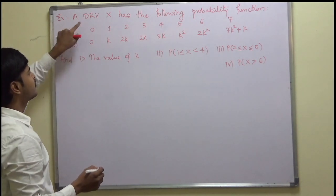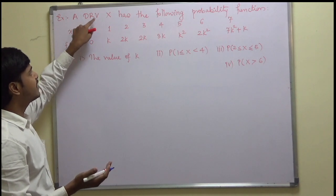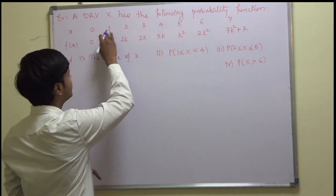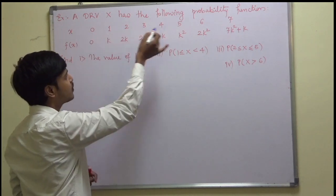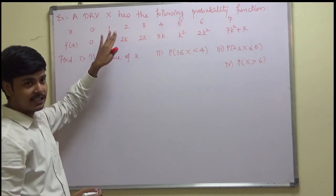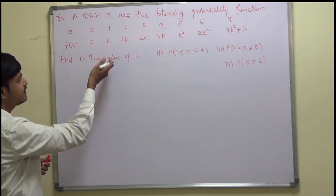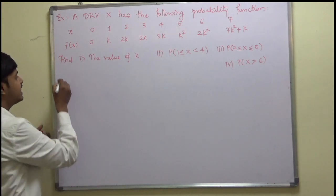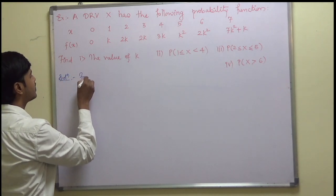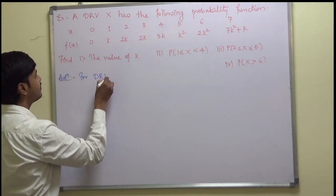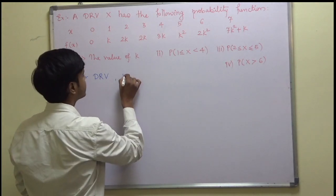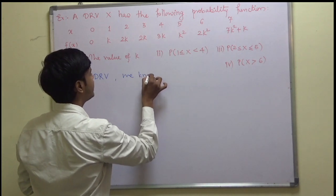As you can see in the problem itself, it is given that the random variable is discrete. If it is not given, you can see that when x is taking the values 0, 1, 2, 3 and so on, this should be a problem of discrete random variable. For discrete random variable, we know that...